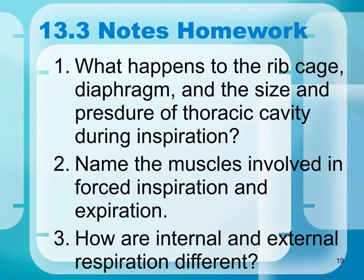13.3 notes homework. Number one: what happens to the rib cage, diaphragm, and the size and pressure of the thoracic cavity during inspiration? Number two: name the muscles involved in forced inspiration and expiration. Number three: how are internal and external respiration different?